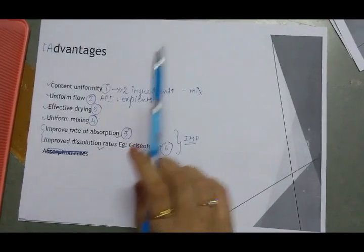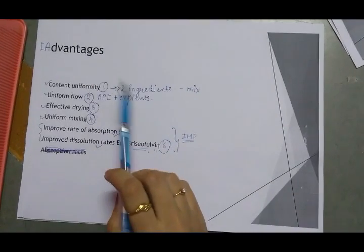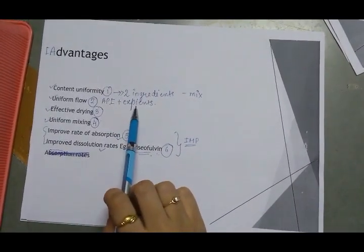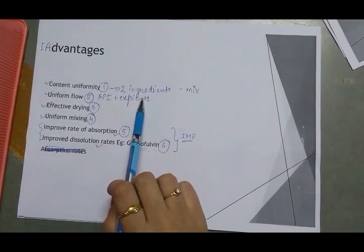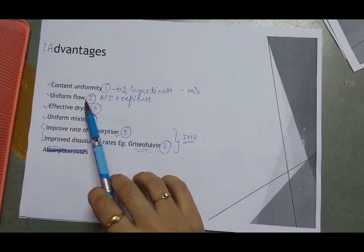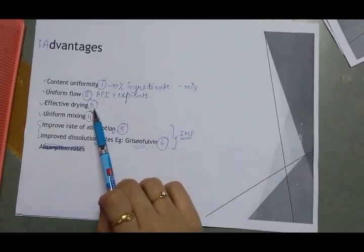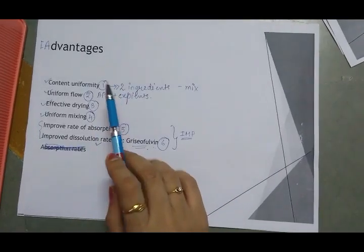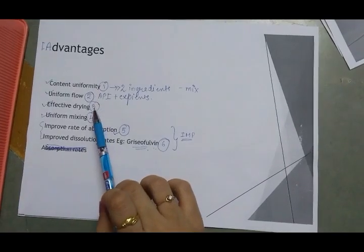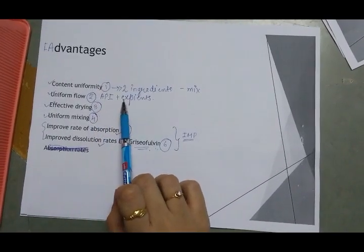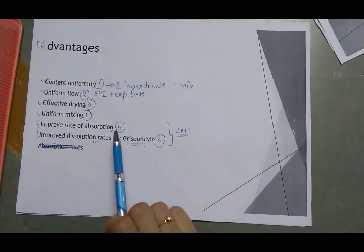In certain dosage forms such as tablets, it is needed that the formulation — the API and excipients — should efficiently flow from the hopper to the tablet compression area. Size reduction is needed to assure uniform flow properties. In certain formulations, the batch needs to be dried before preparing a product. Reducing the particle size actually increases the surface area and facilitates drying as a unit operation.